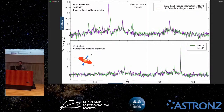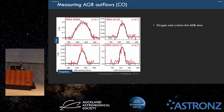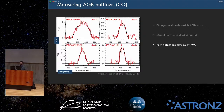We can also use something called CO line emission — it's thermal line emission. It's not as bright, but you can do it with a couple of nearby sources. You can do it in both carbon and oxygen-rich stars and also measure the mass loss, but they're not very bright, so we haven't detected many.